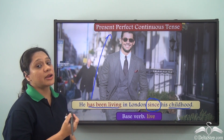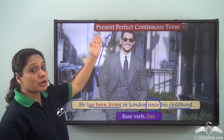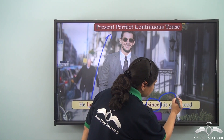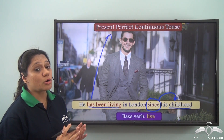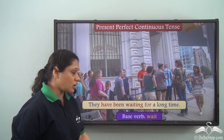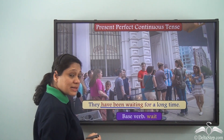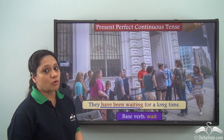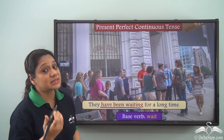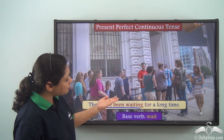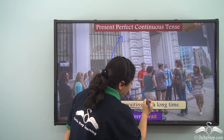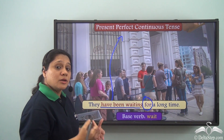So 'for' and 'since' are used with reference to time to show the present perfect continuous tense. 'Since' tells us when the action started — in his childhood — whereas 'for' tells us the duration of time. 'They have been waiting for a long time.' 'Have been waiting' tells us that they started waiting a long time ago, kept on waiting for a long period of time, and they are still waiting now.